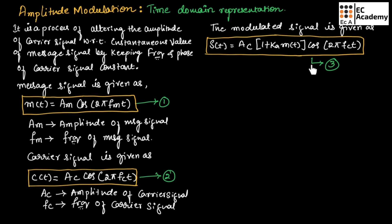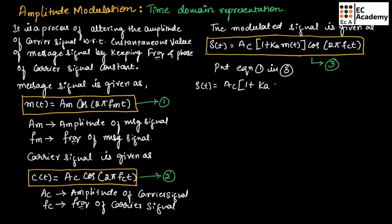In equation number 3, let us substitute the value of the message signal. Putting equation number 1 into equation number 3, we can write s(t) = ac·[1 + ka·am·cos(2π·fm·t)]·cos(2π·fc·t). Here, ka·am can be written as a new term, mu (μ), which is the modulation index.